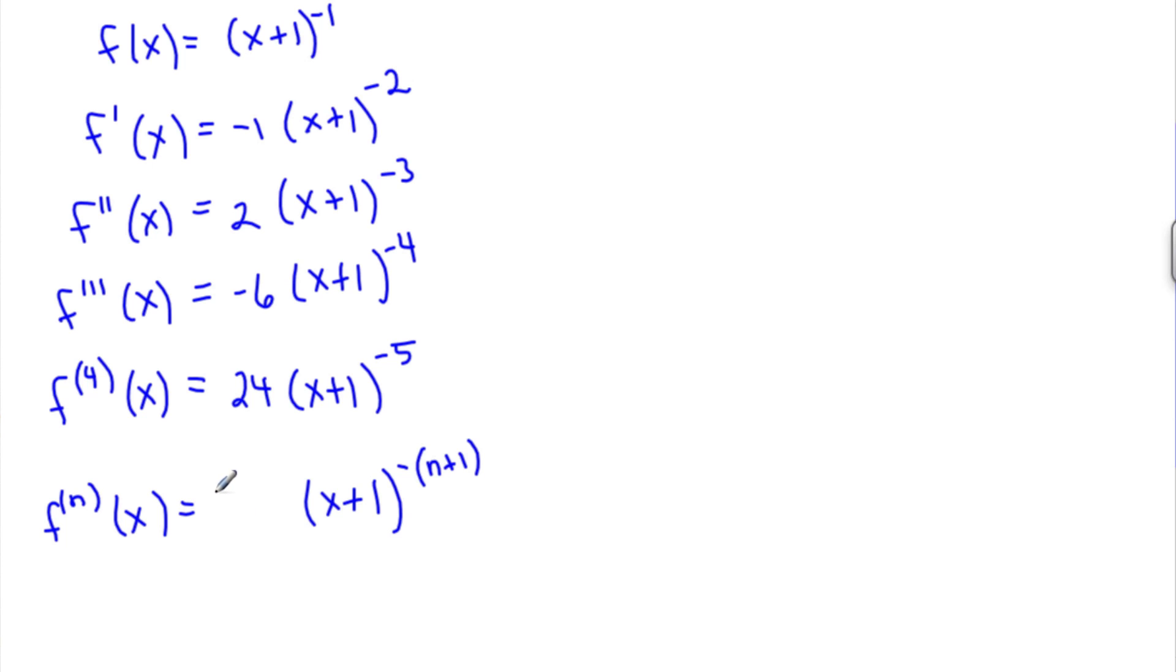If I want to alternate between negative and positive, I'll just have a negative 1 to the n. Let's see what that does. If I plug in 1 here, the first derivative, that's negative. If I plug in 2, negative 1 squared is positive. Plug in 3, negative 1 cubed is negative. So it looks like it's working to the n power.